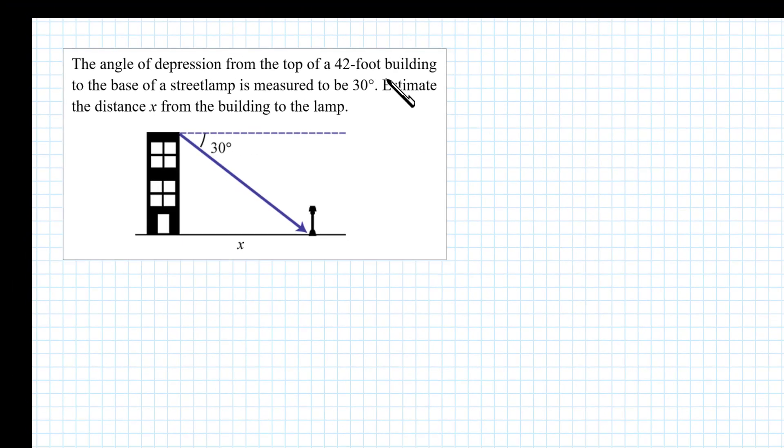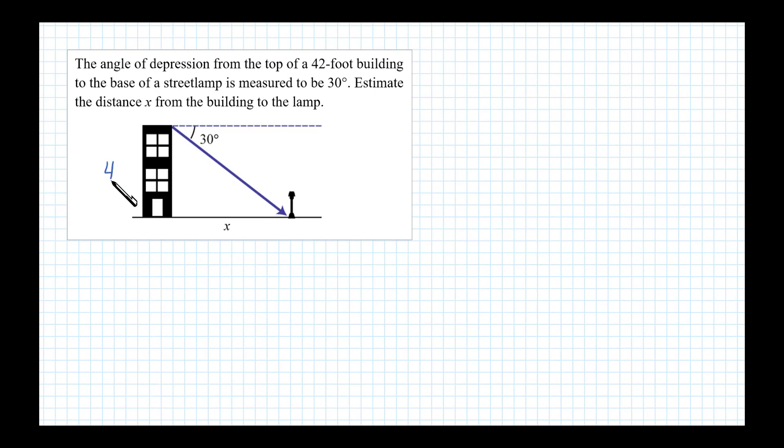Okay, the first number they gave us was 42 feet, so let's go ahead and label the building here. So 42 feet is the height of that. Next they gave us the angle of depression. Now the angle of depression is from the horizontal, so the angle of depression from that horizontal down here you can see is labeled at 30 degrees.